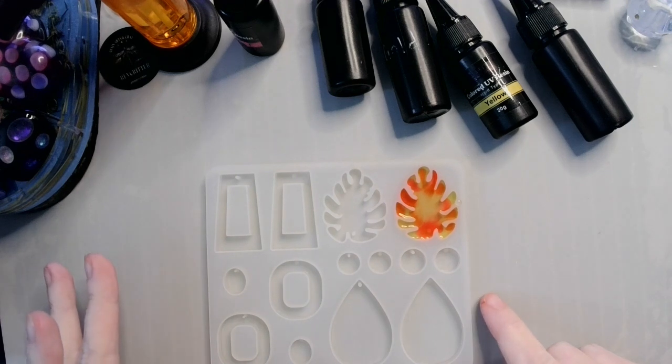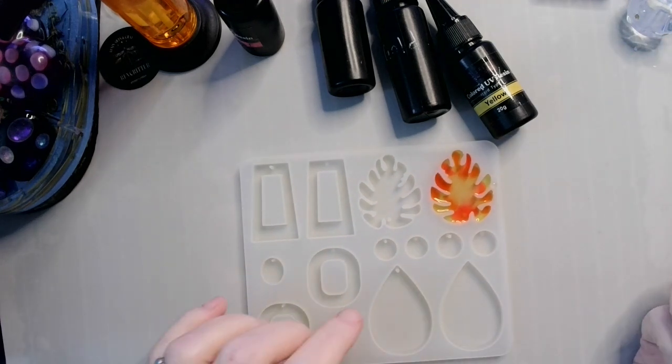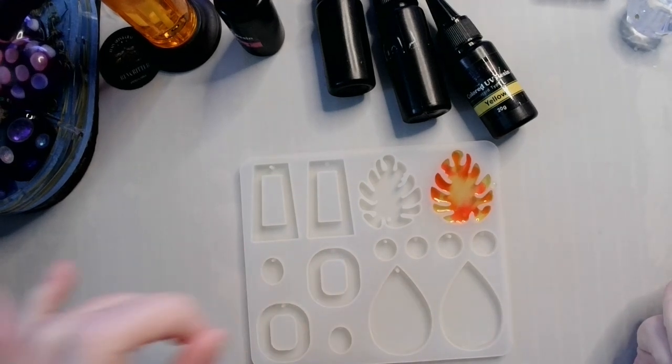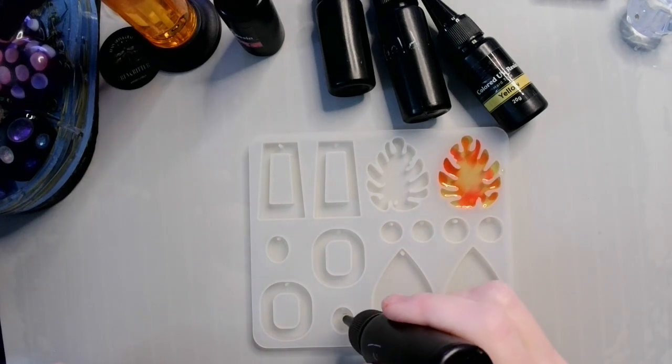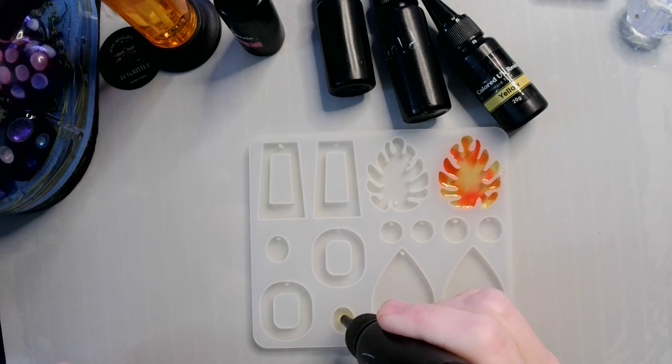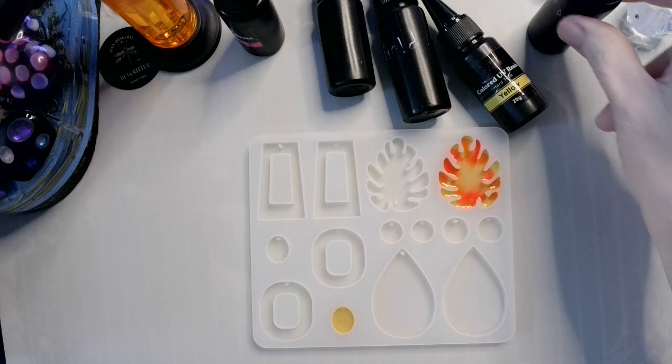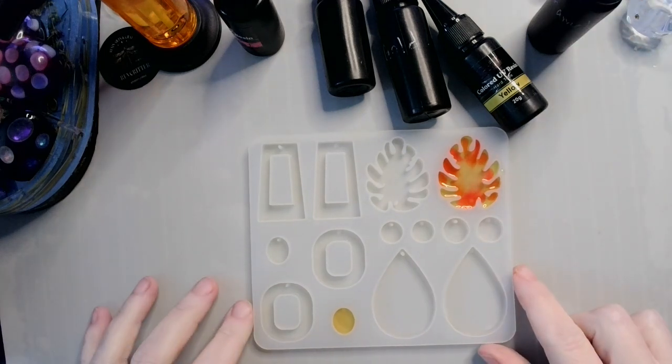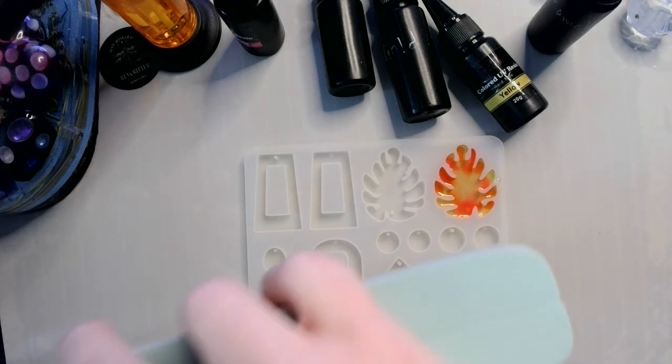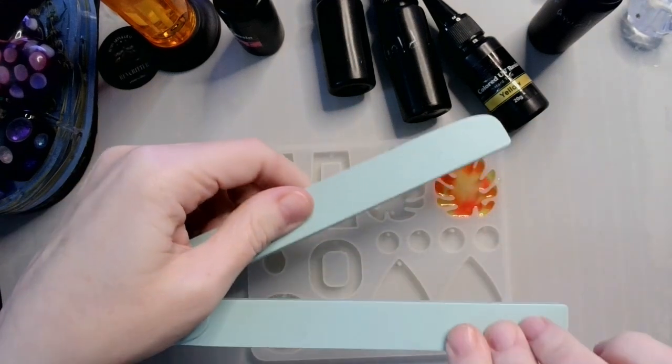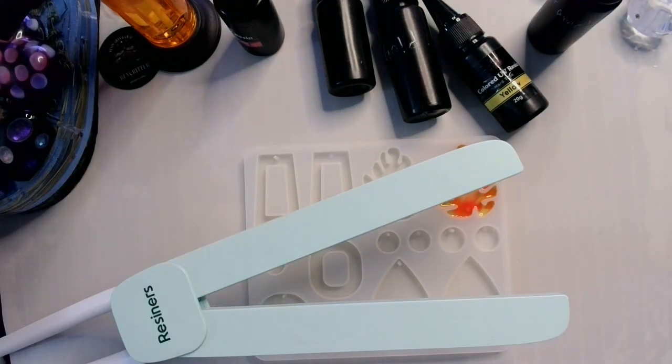Now our turkey is going to need a face, right? A head, whatever. So let's do one of the ovals. Again, caramel. So there's that. So let's cure this under our handy-dandy UV lamp. The first layer. And I will see you back in a couple of minutes.